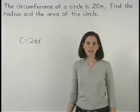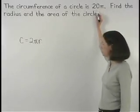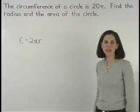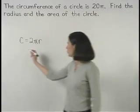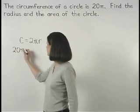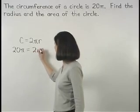And since we're given that the circumference of our circle is 20 pi, we can set up the equation 20 pi equals 2 pi r.